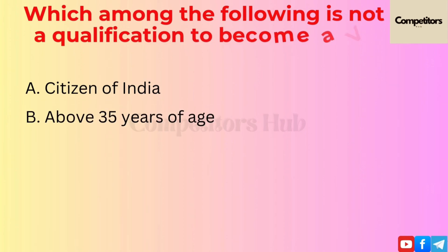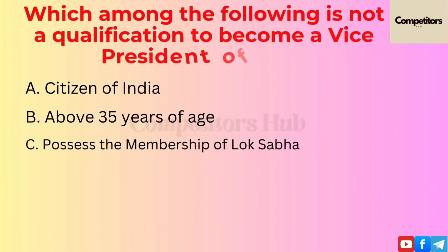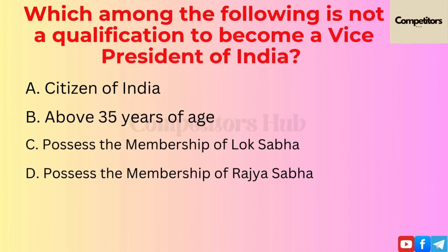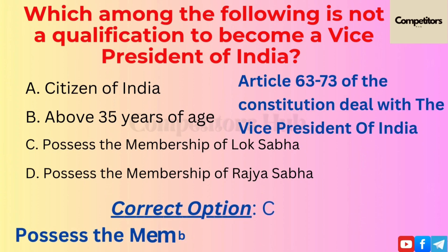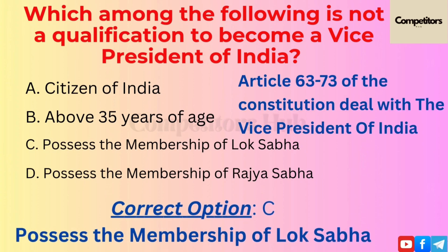The next question is: which among the following is not a qualification to become Vice President of India? Option A: Citizen of India. Option B: Above 35 years of age. Option C: Possess the membership of Lok Sabha. Option D: Possess the membership of Rajya Sabha. The correct option is C, possess the membership of Lok Sabha.